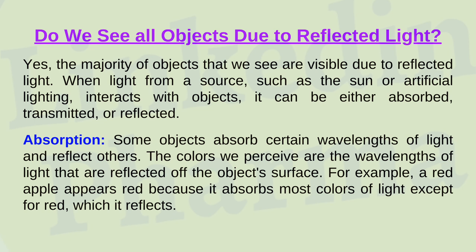Do we see all objects due to reflected light? Yes, the majority of objects we see are visible due to reflected light. When light from a source such as the sun or artificial lighting interacts with objects, it can be absorbed, transmitted, or reflected. Absorption: some objects absorb certain wavelengths and reflect others — the colors we perceive are the wavelengths reflected off the object's surface. For example, a red apple appears red because it absorbs most colors except red, which it reflects.